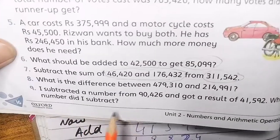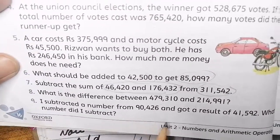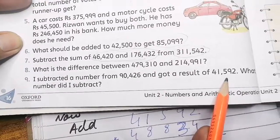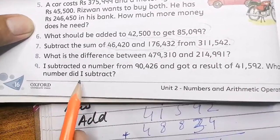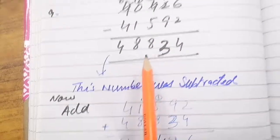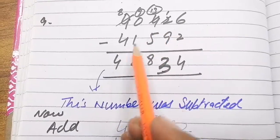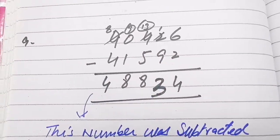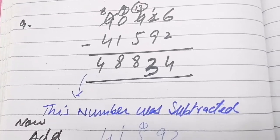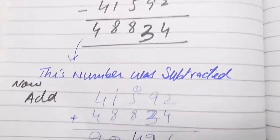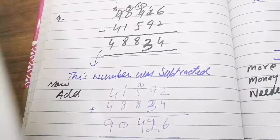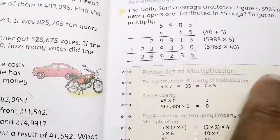Question 9: I subtracted a number from 904126 and got a result of 401592. What number did I subtract? You can add the result and the subtracted number to recover the original. Add 401592 to the missing number and you get 904126 back.